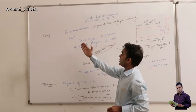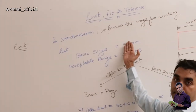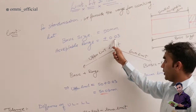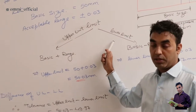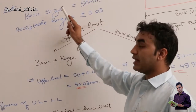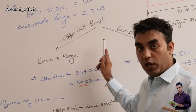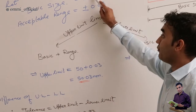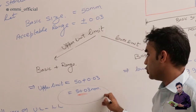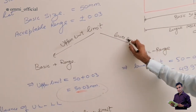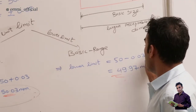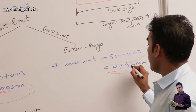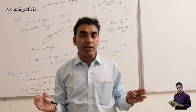Let's understand this concept with a small example. Suppose the basic size is 50 mm and the acceptable range given to us is plus or minus 0.03 mm. For the upper limit, it is the sum of the basic size and the maximum upper deviation, and for the lower limit it is the sum of the basic size and the lower deviation. So the upper limit is 50 plus 0.03, which gives 50.03 mm, and the lower limit is 50 minus 0.03, which gives 49.97 mm.